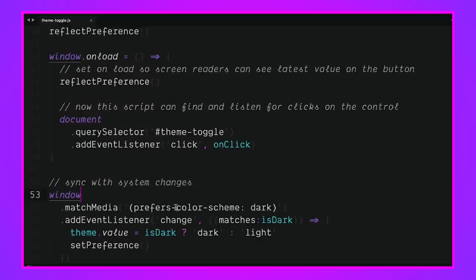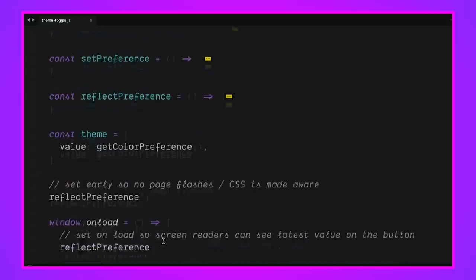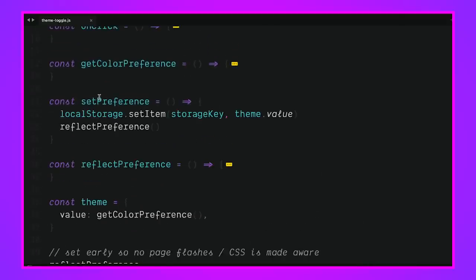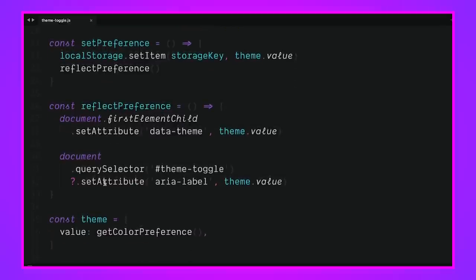And last down here, we're going to sync with the system changes. We say window.matchMedia, looking to see if it's light or dark, add a listener for whether or not it's dark. When it changes, we want to know: is it dark? If it is, set theme.value to dark; else set it to light. Similar to how we were returning light and dark from our preference query up above, we do it here in this listener. Then we call setPreference, which sets to local storage, reflects the preference up into our HTML document and down into our button.